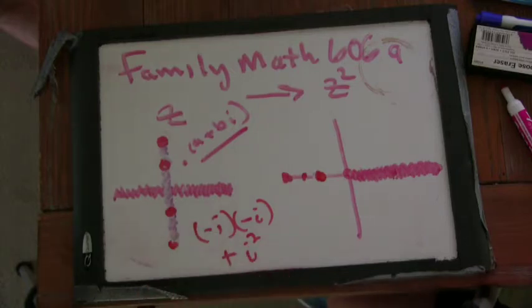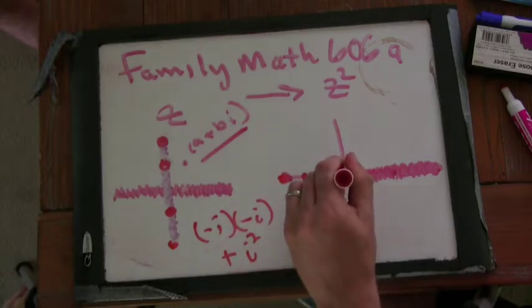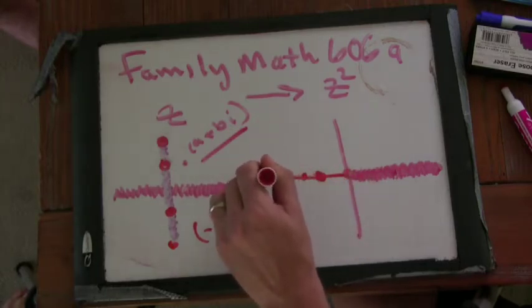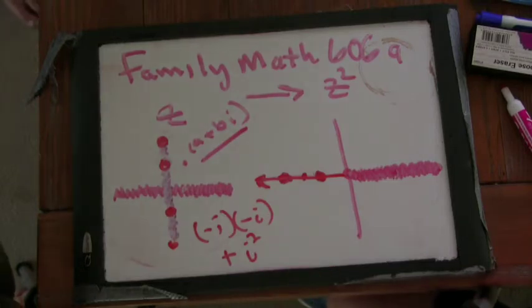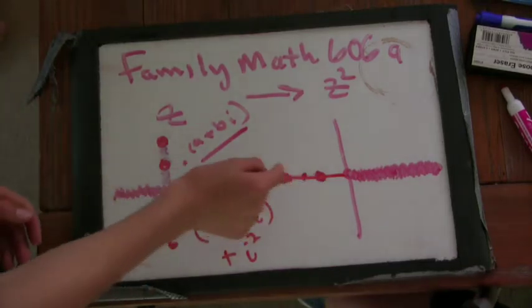Where do you think negative two I goes? Negative four. Negative four. So negative two I goes to negative four. So what are we seeing? We're sort of seeing the same thing on the negative axis. We just hit, I mean, all of the imaginary numbers just hit the negative axis.